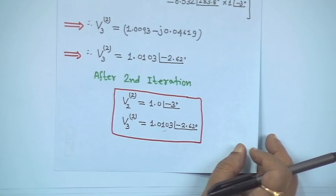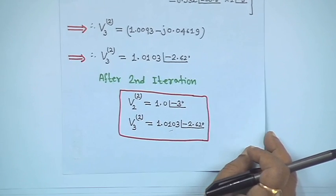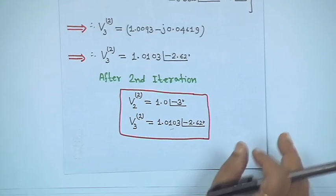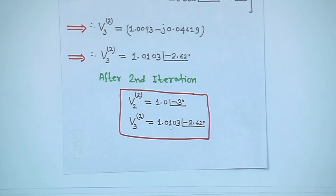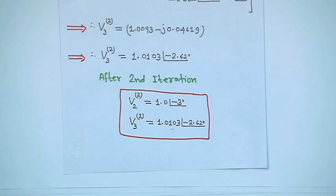Different versions of PV bus accommodation exist in the literature for the Gauss-Seidel method, but this version is quite easier. Next, we will take the Newton-Raphson method — but first, a little break. Thank you.